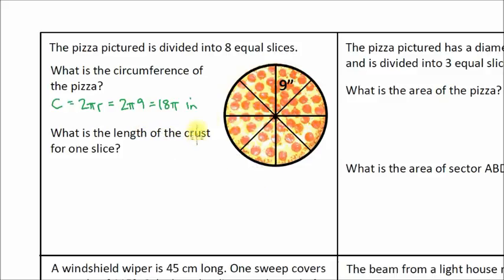The next question is, what is the length of the crust for one slice? We've done this kind of problem before. This is a relatively easy problem to solve. The first thing we figured out was the entire circumference, and we did that. And we know the length of one crust is done this way. Think about this: if we've got eight equal slices, then we're looking at one out of eight equal slices, and that is equal to one-eighth or one out of eight of the pizza. So think about this as a ratio. It's one out of eight, or one-eighth.